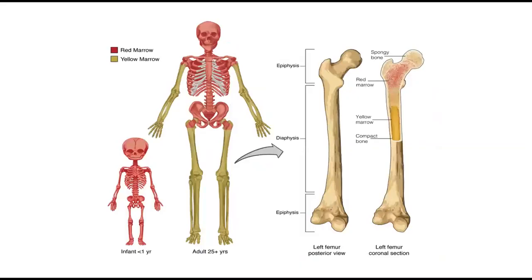When you are an infant below one year, all the bones in your body give rise to red and white blood cells. But when you are an adult around 25 years, some bones develop yellow bone marrow. The bones colored yellow or green in the diagram give rise to yellow bone marrow, and red-colored bones give rise to red bone marrow.